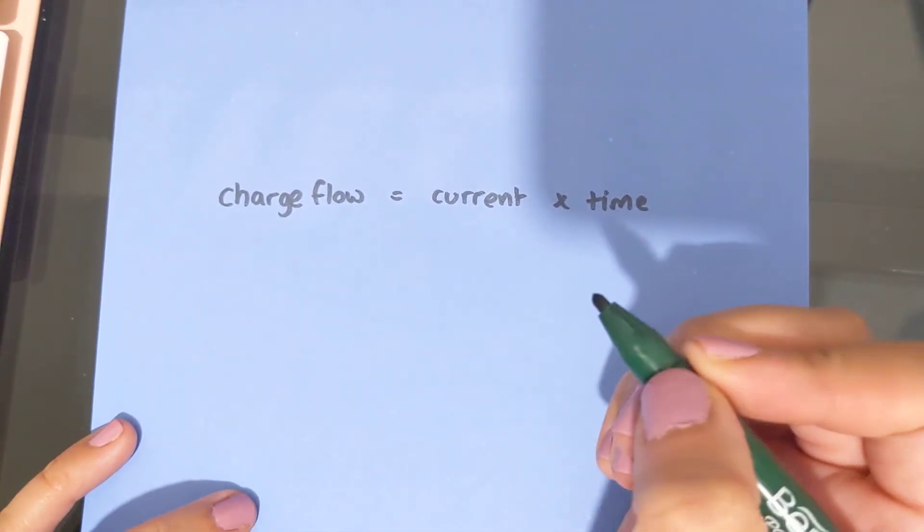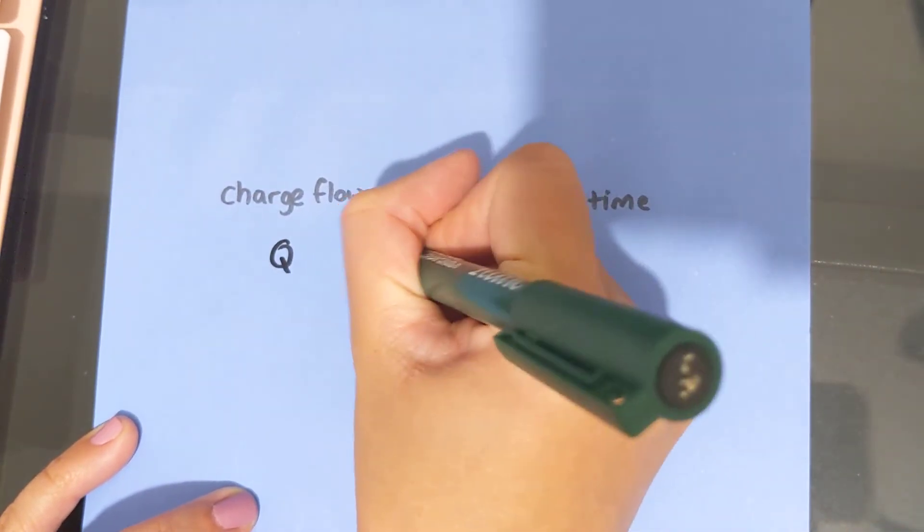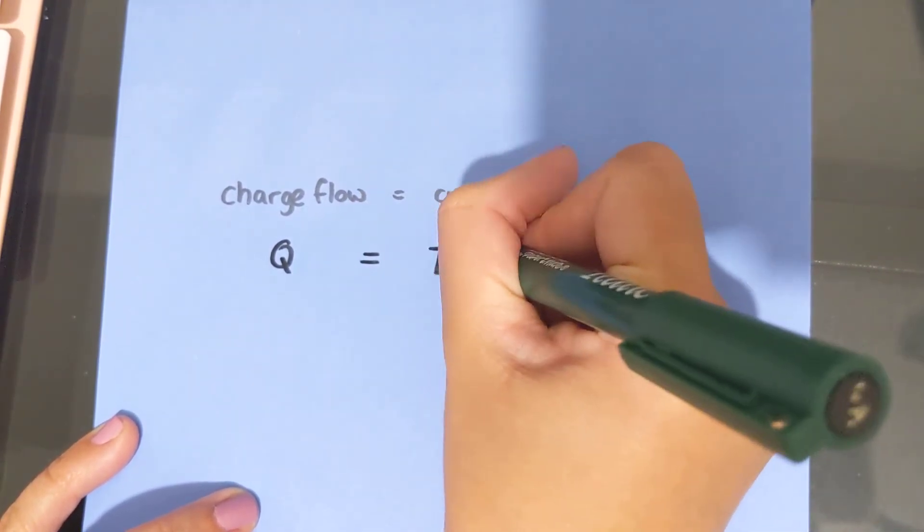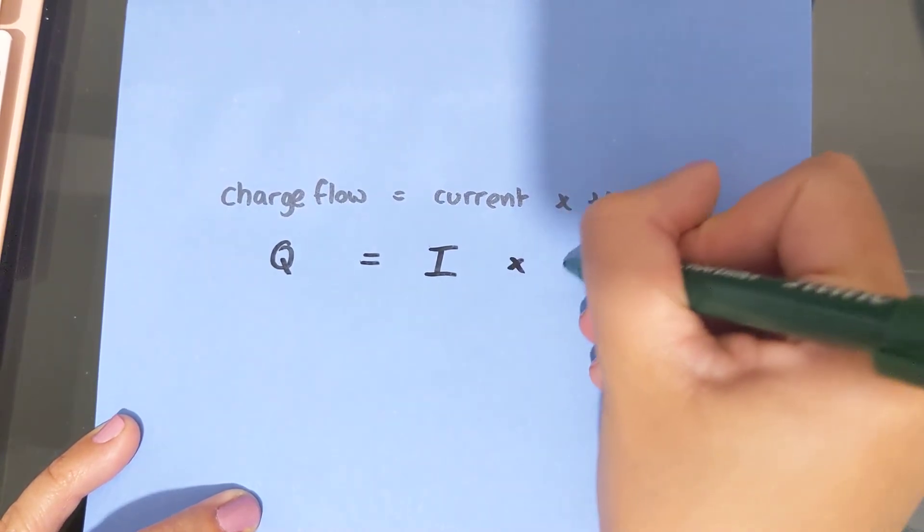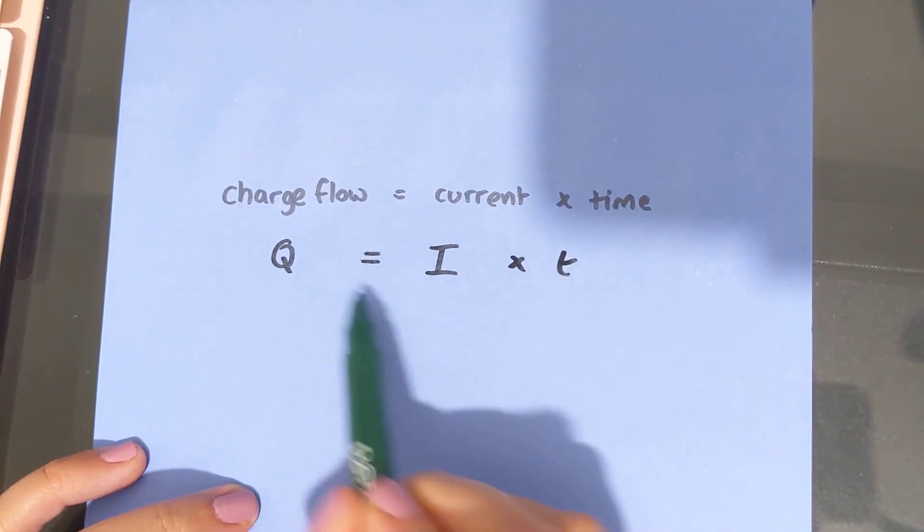So the symbol for charge flow is a capital Q. The symbol for current is a capital I. And the symbol for time, luckily, is a small letter t. So that would be the symbol equation.